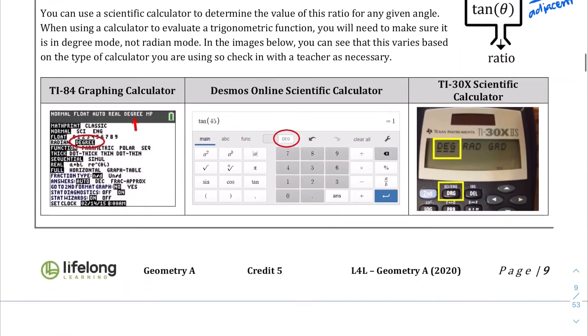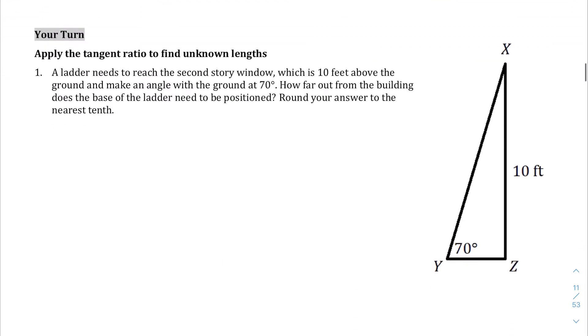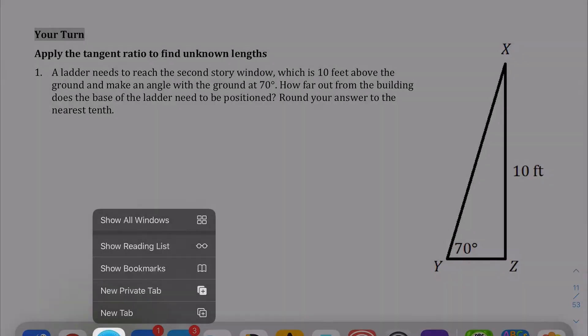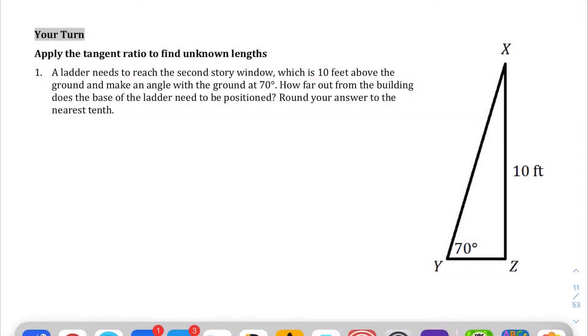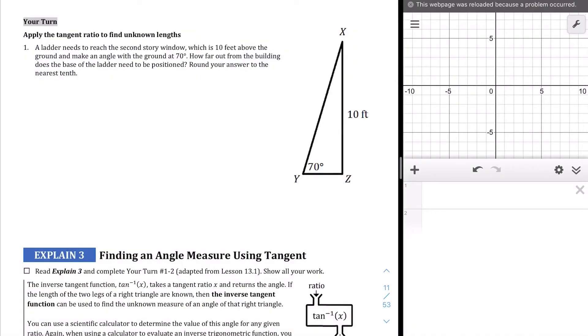As usual, I'm going to let you read the explain examples on your own. We're going to jump straight into the Your Turn questions here. We're actually going to use the Desmos calculator to do it. So the context of this question is that we have a ladder, and it needs to reach the second story window, which is 10 feet above the ground.